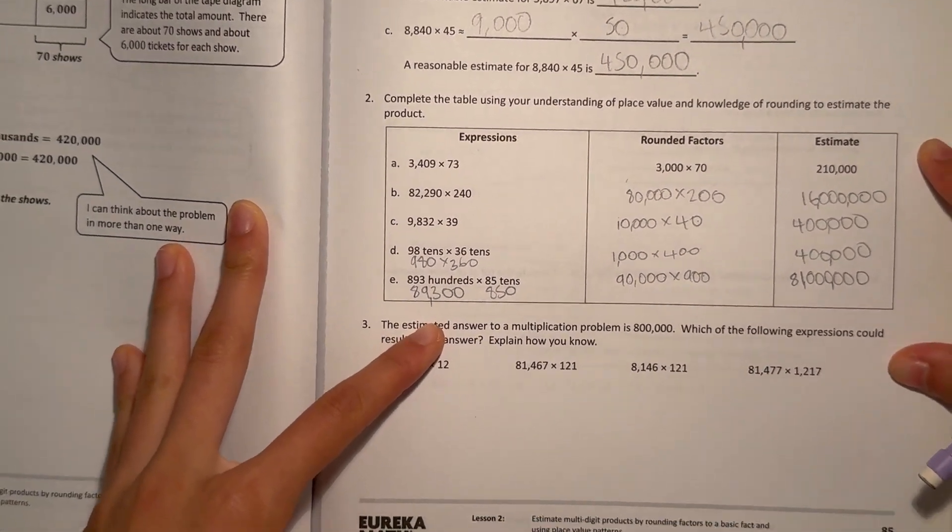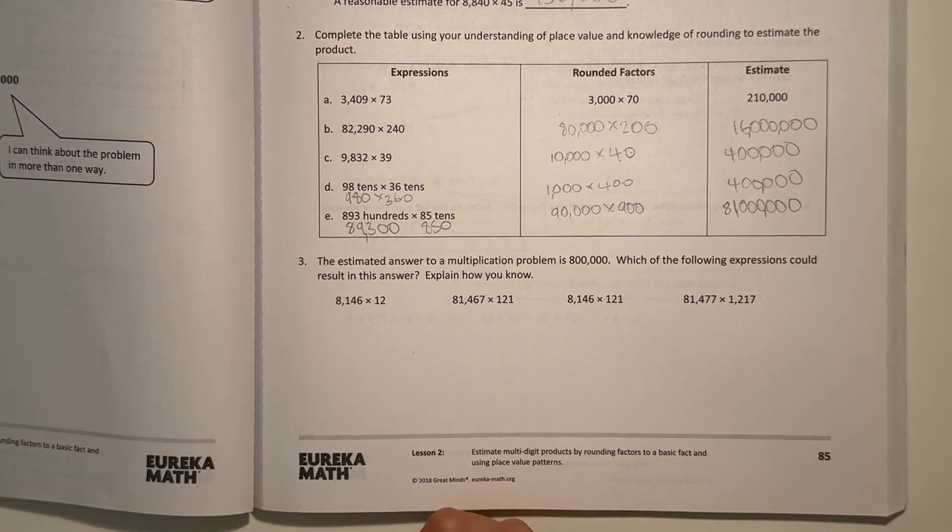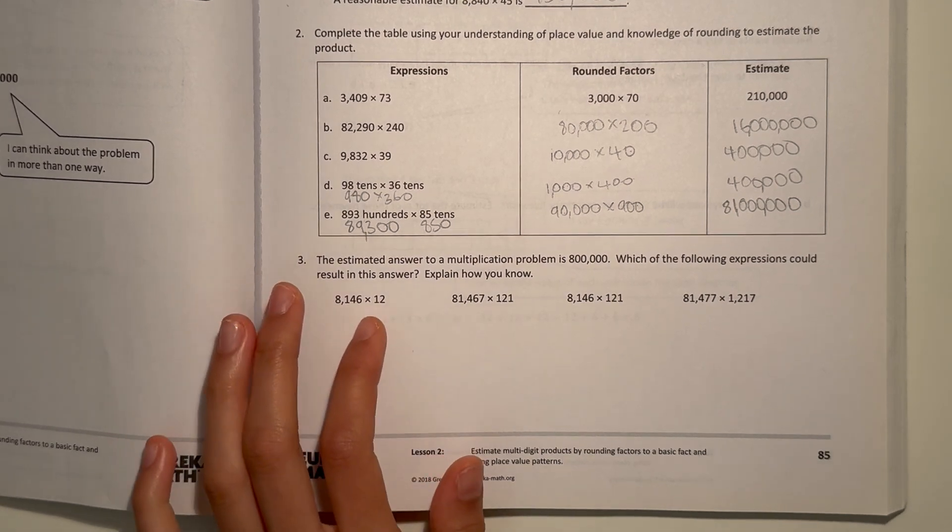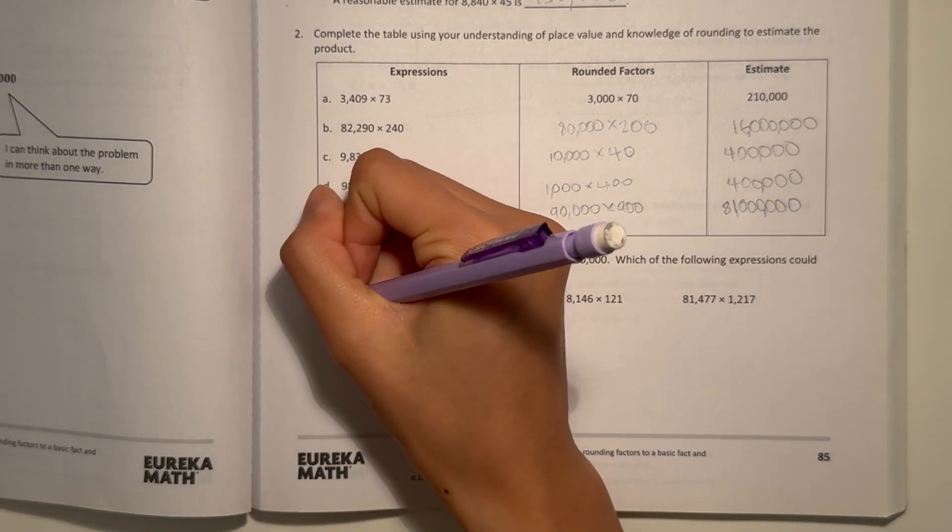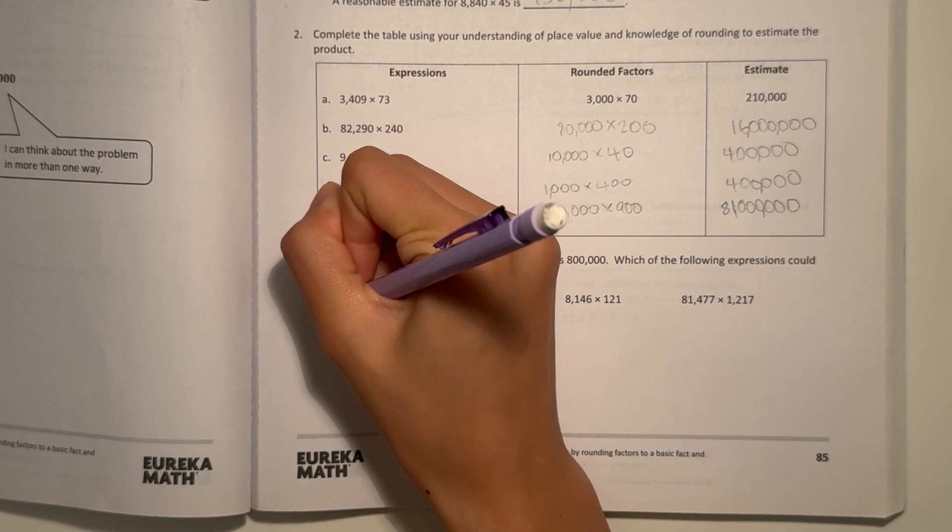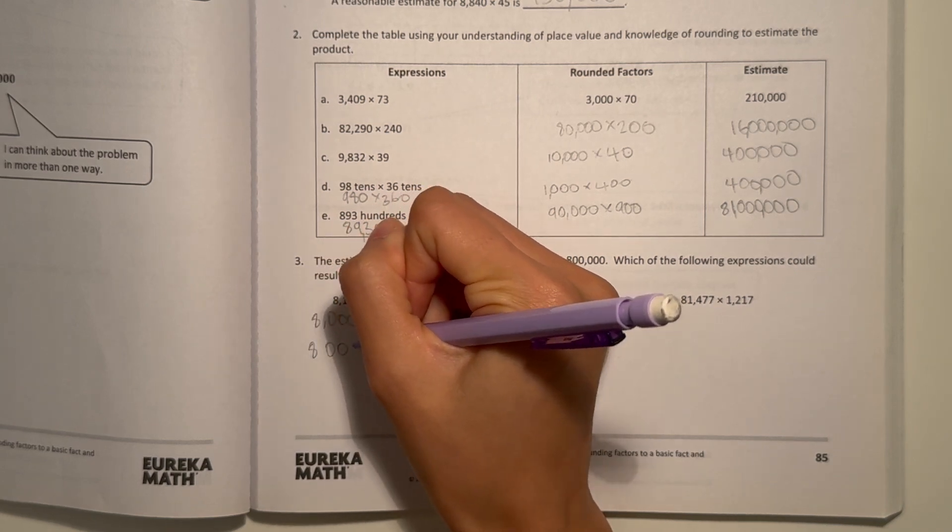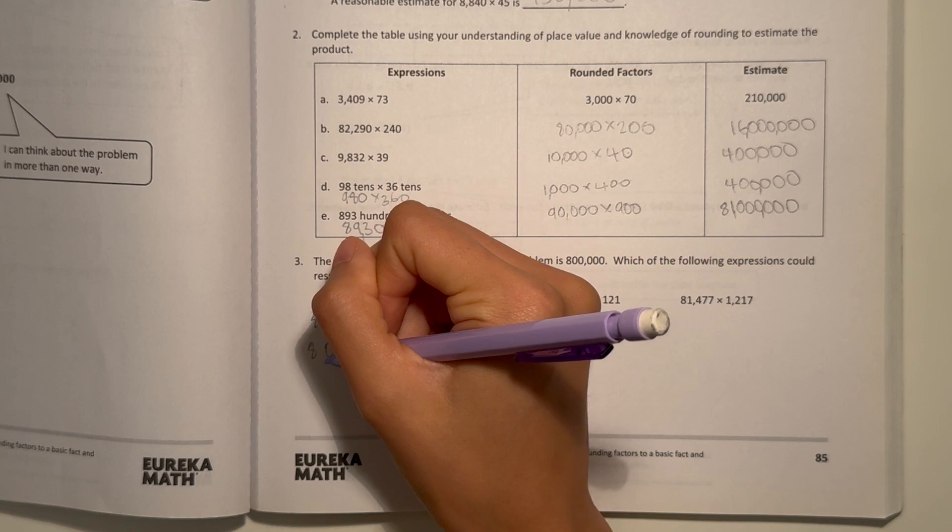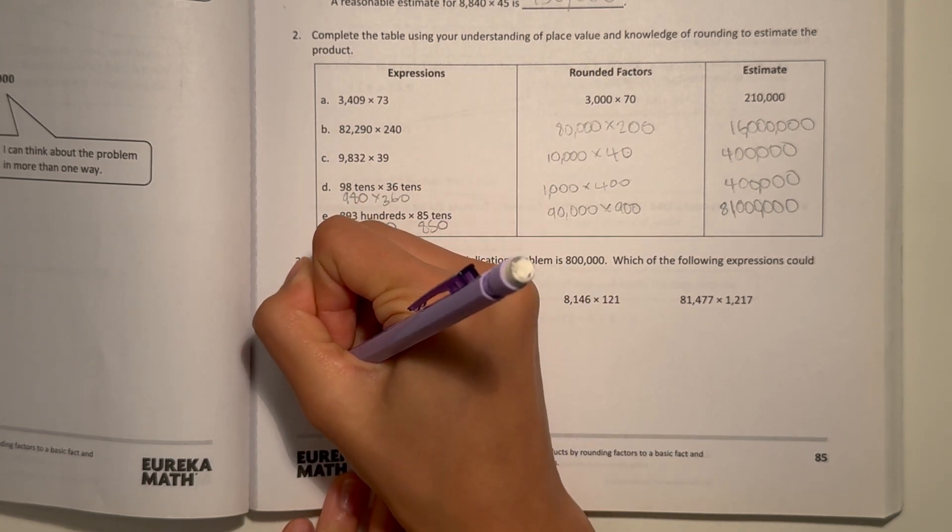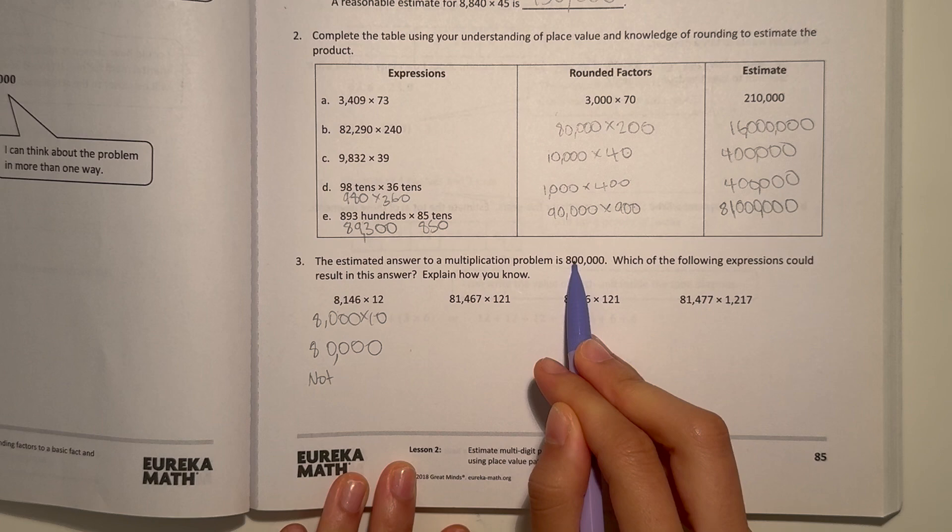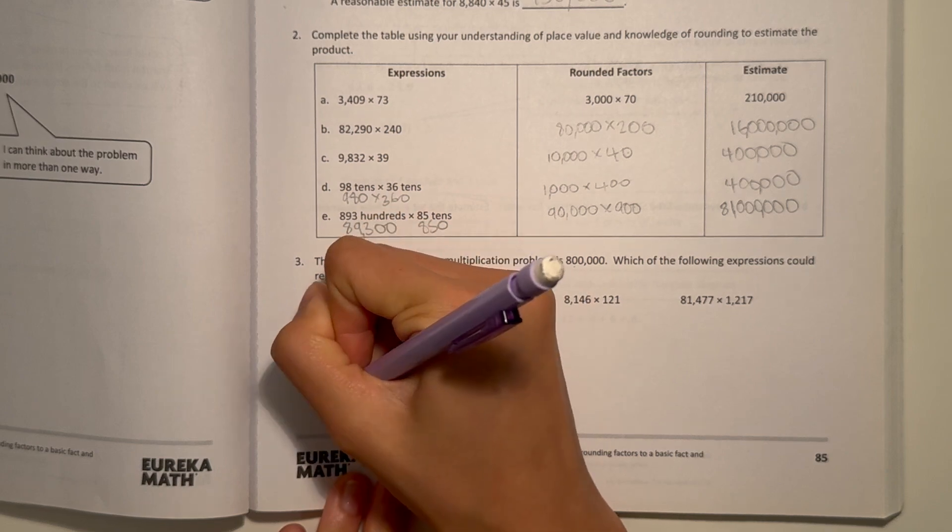Number 3 says the estimated answer to a multiplication problem is 800,000. Which of the following expressions could result in this answer? Explain how you know. First we have 8,146 × 12. This number would round to the nearest thousands, which would be 8,000 × 10. I would have 4 zeros. So that would be 80,000, and that's not the same. We can just write not enough zeros, because this number needs 1, 2, 3, 4, 5 zeros, and this number only has 4.